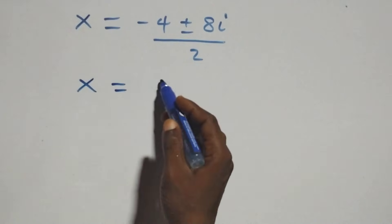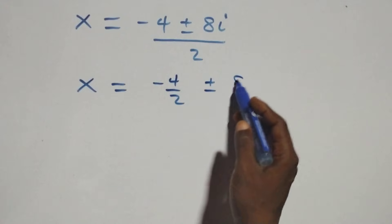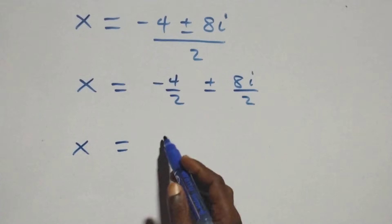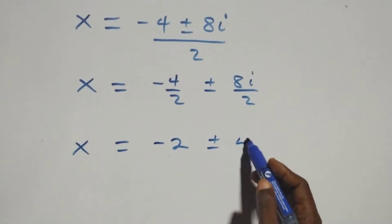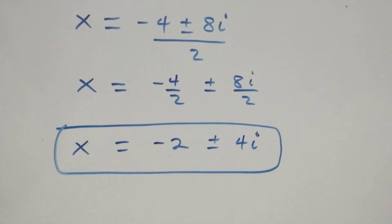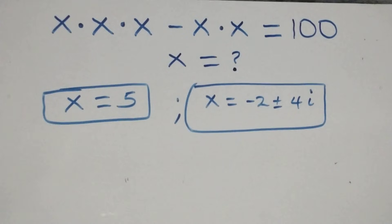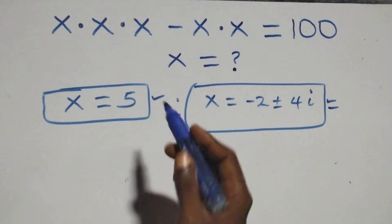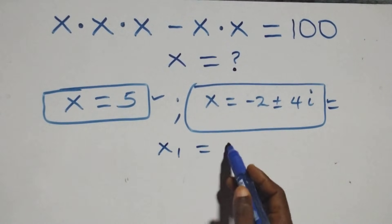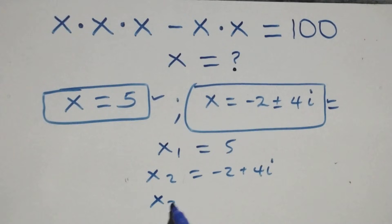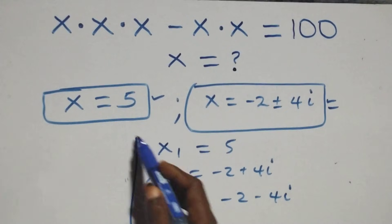So we have x equals to minus 4 plus or minus 8i, over 2, which gives plus or minus 4i. This implies two complex solutions. Therefore altogether we have three solutions: x₁ equals to 5, x₂ equals to minus 2 plus 4i, and x₃ equals to minus 2 minus 4i — one real solution and two complex solutions.